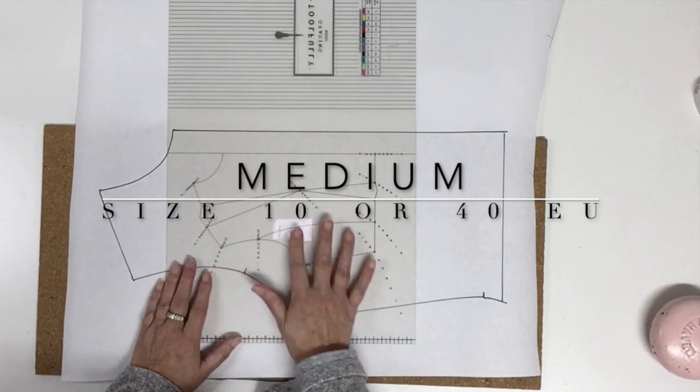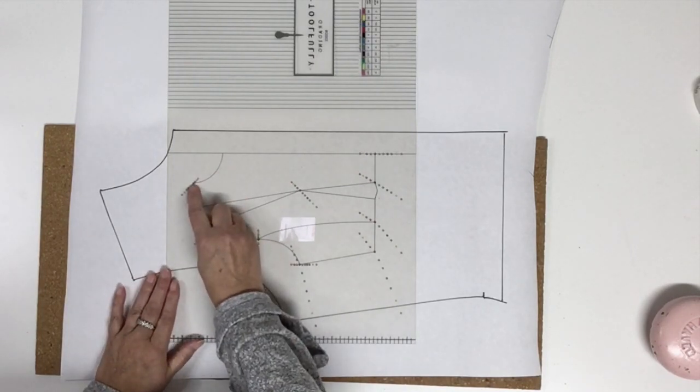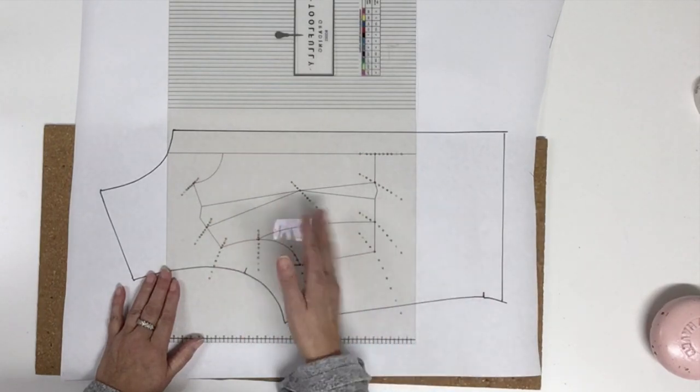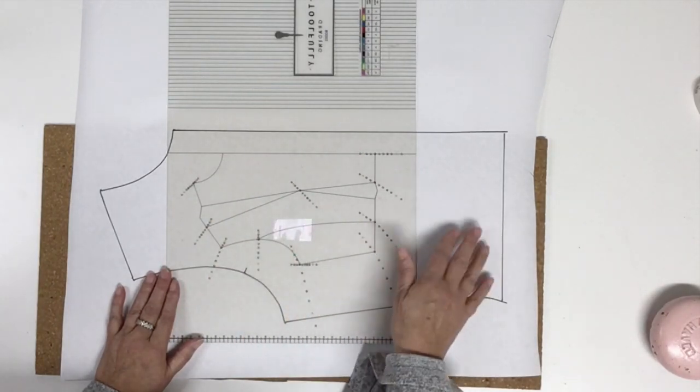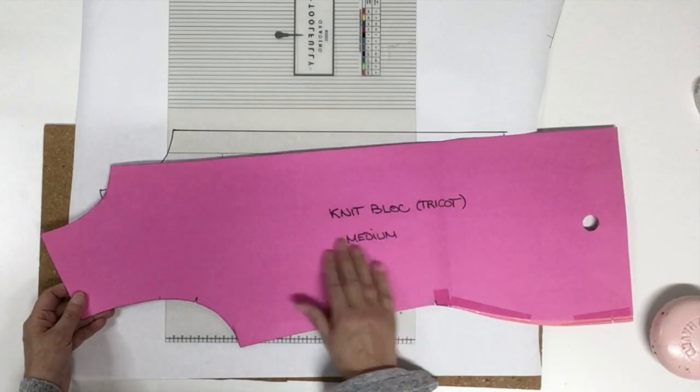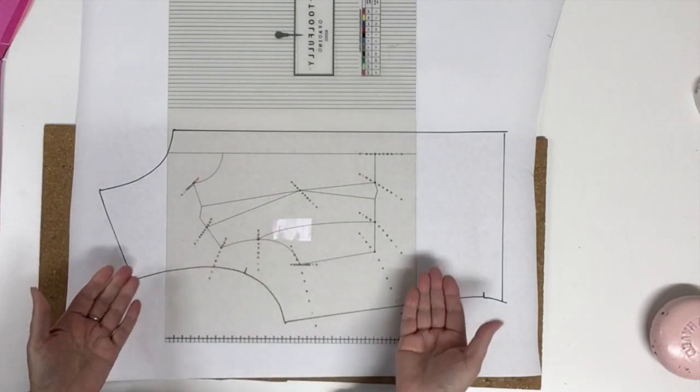And again it doesn't mean that you have to use the black dot as your basic. It always depends on the size of your basic pattern. The pattern that I use today is a medium, so I will use the black as my basic size.